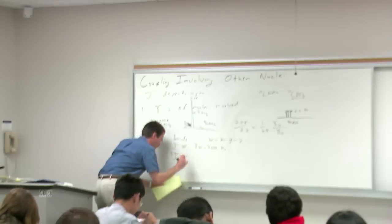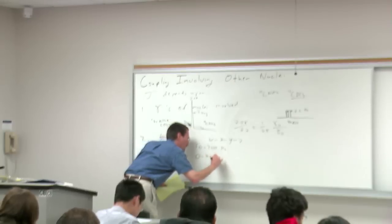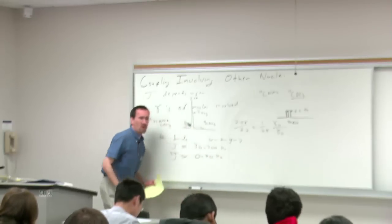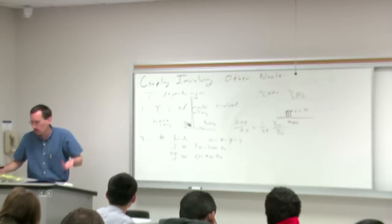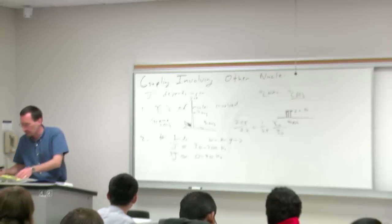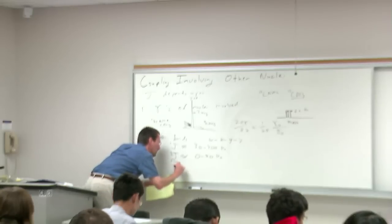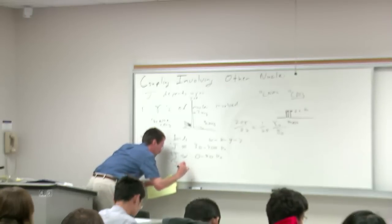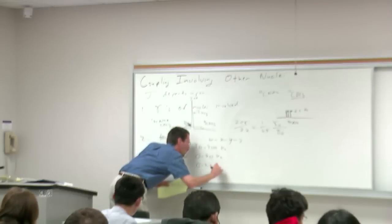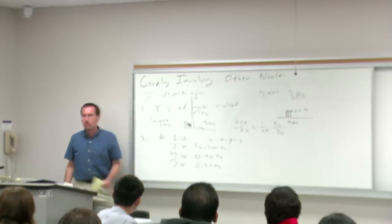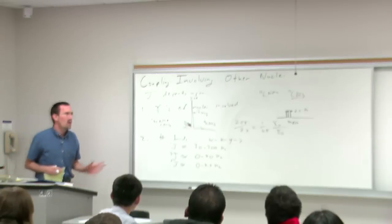J2 values are generally on the order of 0 to 20 hertz — if you want to keep a number in mind, something like 10 to 20 hertz. J3 values are generally also on the order of 0 to 20 hertz. In other words, 1-bond coupling is huge; 2-bond and 3-bond coupling is smaller.